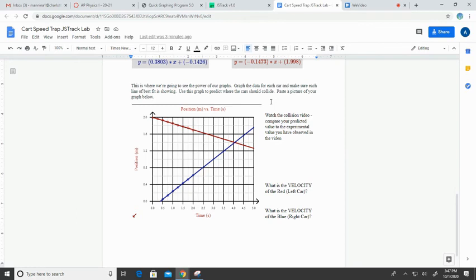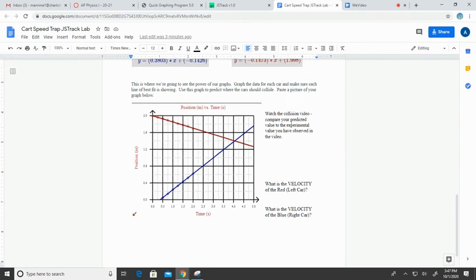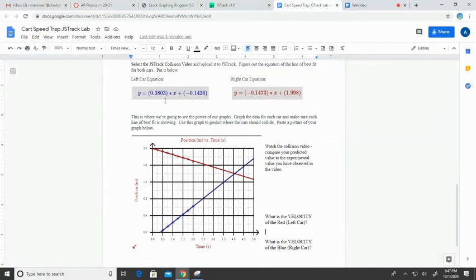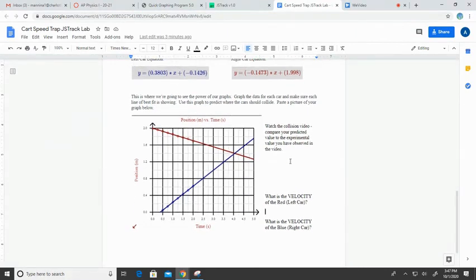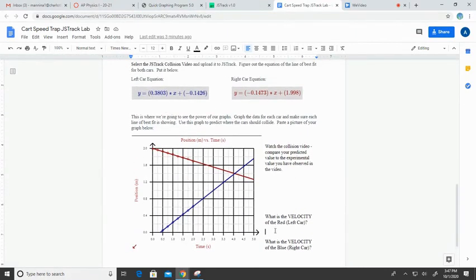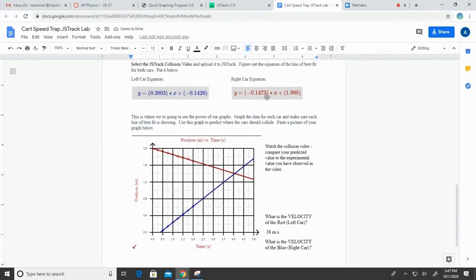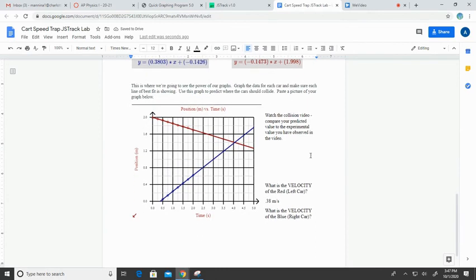To finish up our lab, it asks what is the velocity of the red car and the blue car. We already talked about it before, but the red car velocity, that's the one going from left to right—we said the velocity was 0.38 meters per second, and it is positive because the slope is positive. For the blue car, same deal, we're looking at the slope of this line of best fit. The velocity of this one is negative 0.14 meters per second. The slope tells us basically how much position I've gone in a certain amount of time, and negative and positive just mean direction.